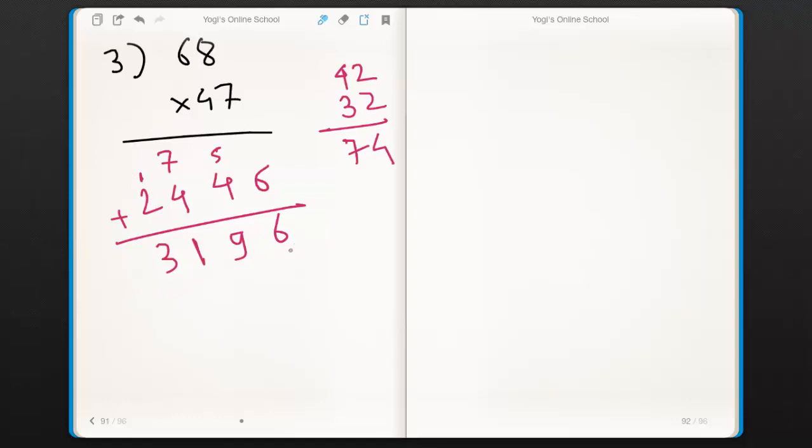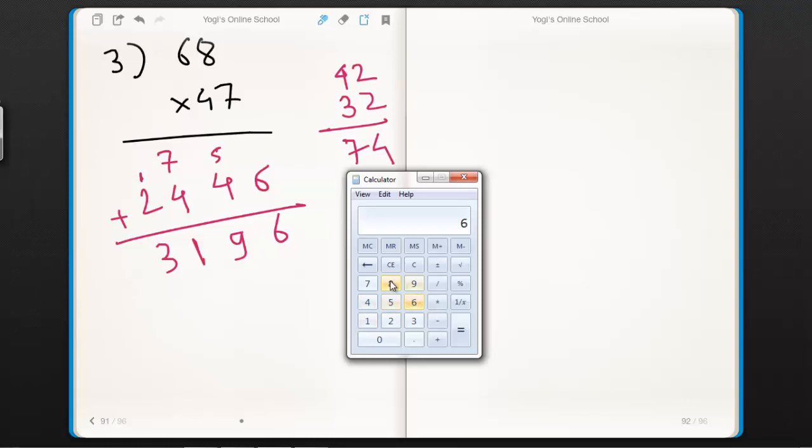Let's recheck our answer using calculator. 68×47 is 3196, same answer as ours. Therefore we got correct answer.